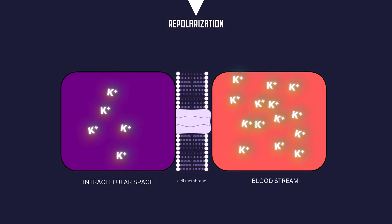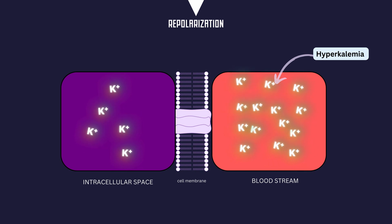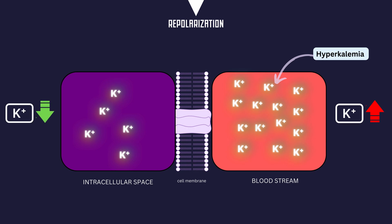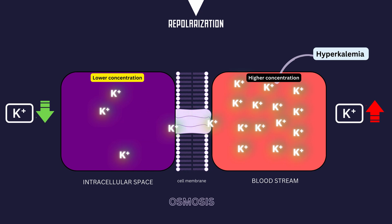Imagine you have a higher concentration of potassium in the bloodstream. This could happen due to various factors, such as dietary intake, medication effects, or certain medical conditions. Nature tends to balance things out, so when there's a higher concentration of potassium in the blood compared to inside the cells, potassium ions will naturally want to move from an area of lower concentration — inside the cells — to an area of higher concentration in the blood. This movement occurs through osmosis, where water follows the flow of ions to maintain equilibrium. As a result, more potassium ions will move out of the cells into the bloodstream to equalize the concentration gradient, helping regulate the balance of potassium ions both inside and outside the cells.